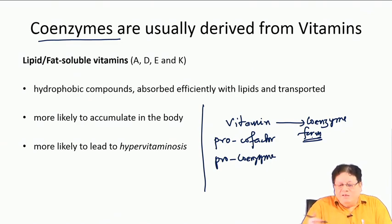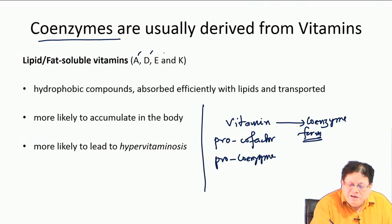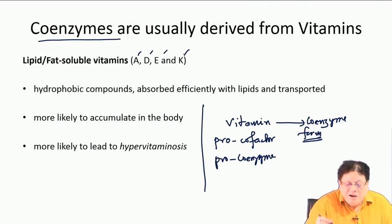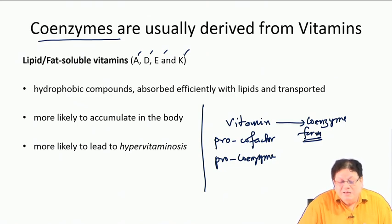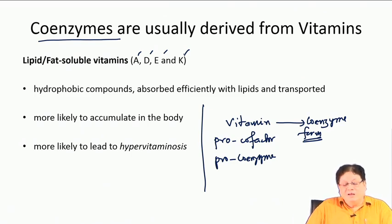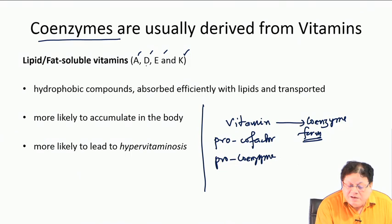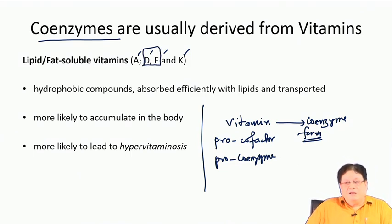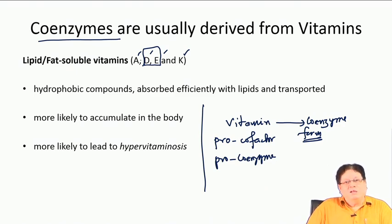The lipid-soluble vitamins are A, D, E, and K. Many of these — like A and K — are actually precursors to coenzymes, whereas D and E have different functions and do not actually help in enzymatic catalysis. So not all vitamins are precursors to coenzymes.